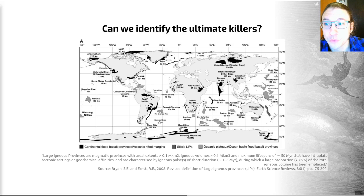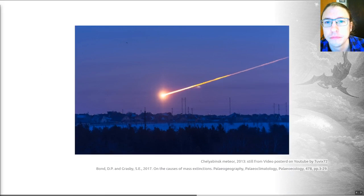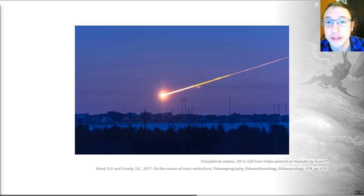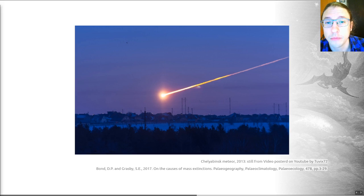Work is ongoing as to exactly how strong that relationship is. Another obvious and relatively well-justified ultimate kill mechanism is bombardment from extraterrestrial objects — meteorites, asteroids, etc. Even this is tricky to be sure about, because many of the proximal kill mechanisms we associate with a bolide impact, such as cooling and warming, acidification, and ozone destruction, also occur with large igneous provinces.